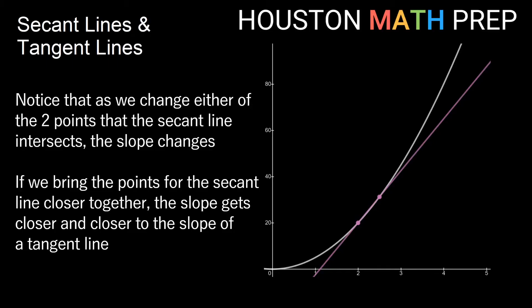For a tangent line, we don't focus on going through two points on the function. We focus on going through one point on the function and just brushing the edge of the graph at a particular point with our line. This tangent line doesn't tell us about the average rate of change anymore. Its slope tells us about the instantaneous rate of change.